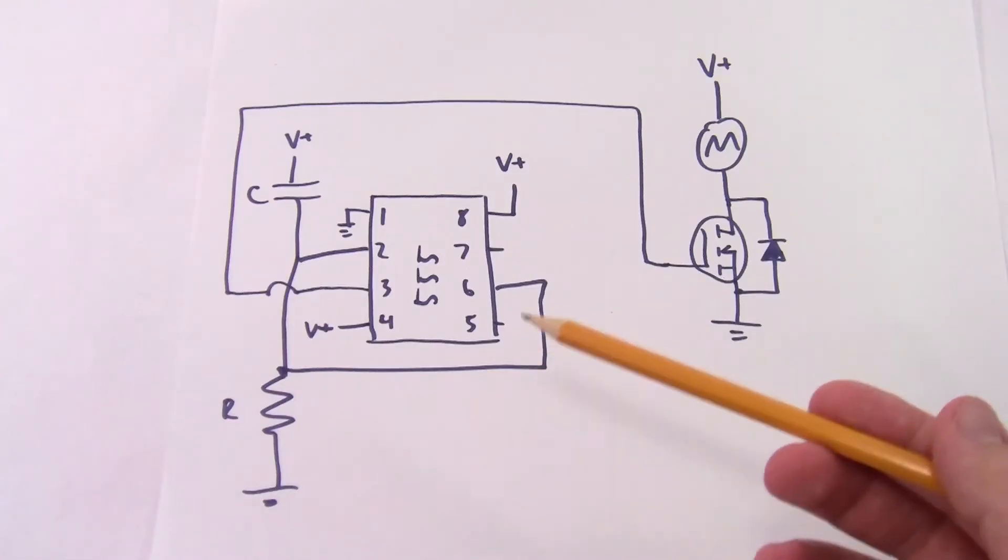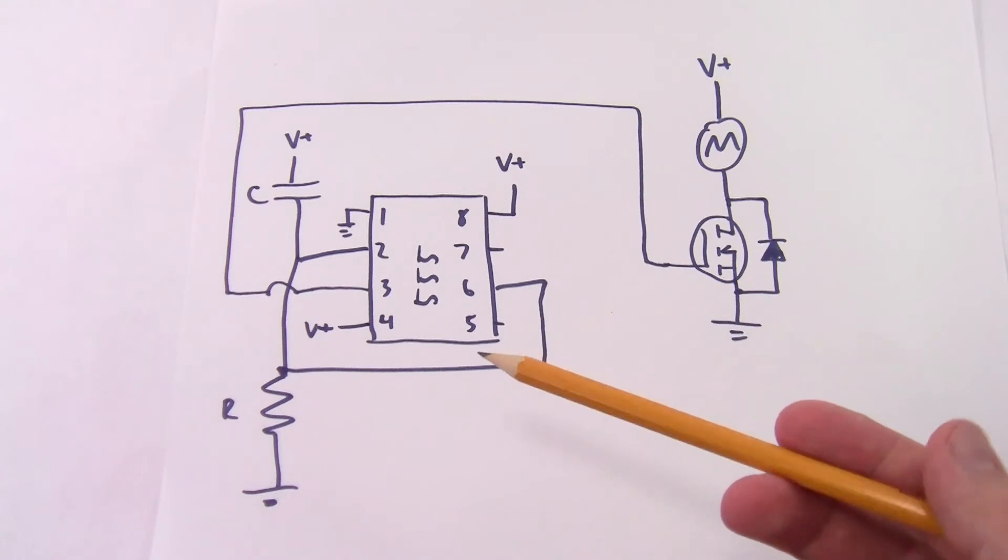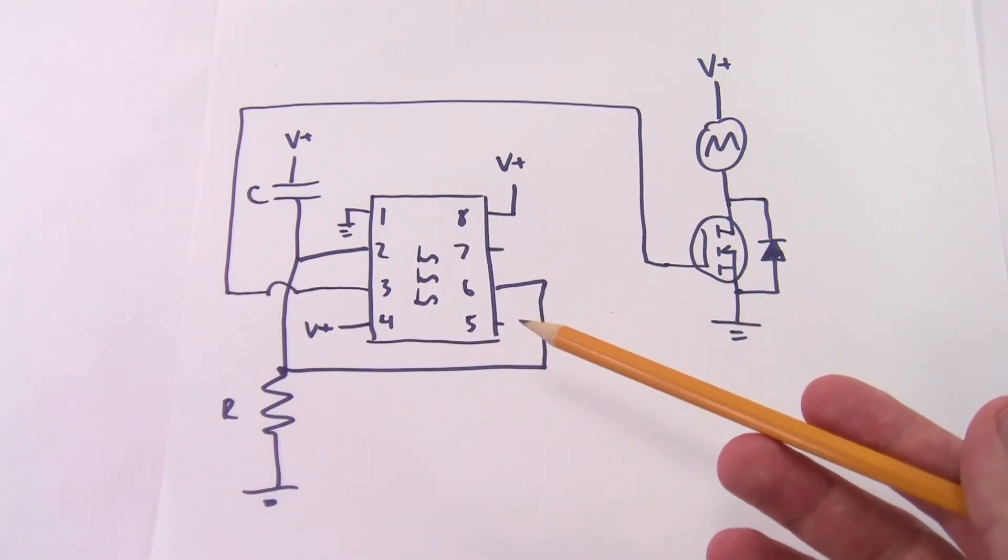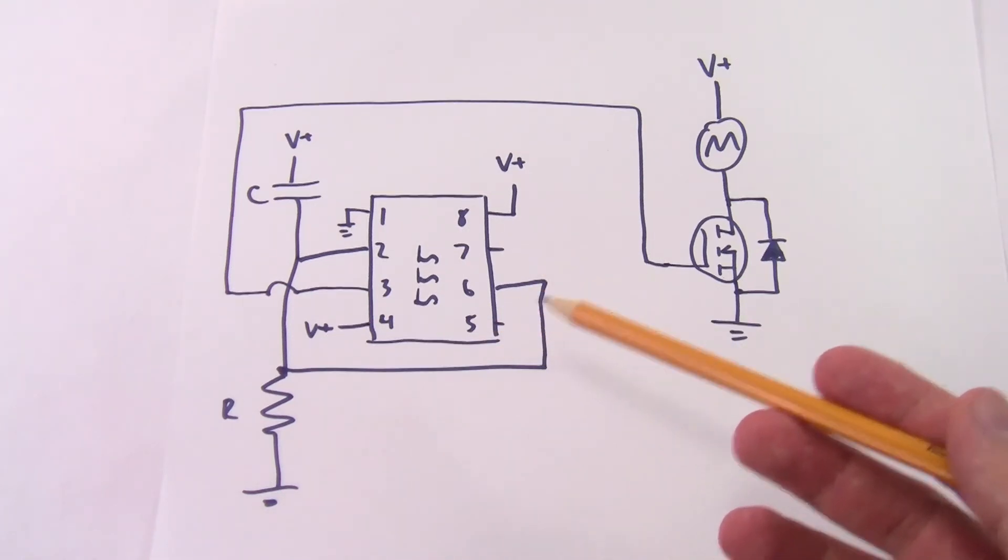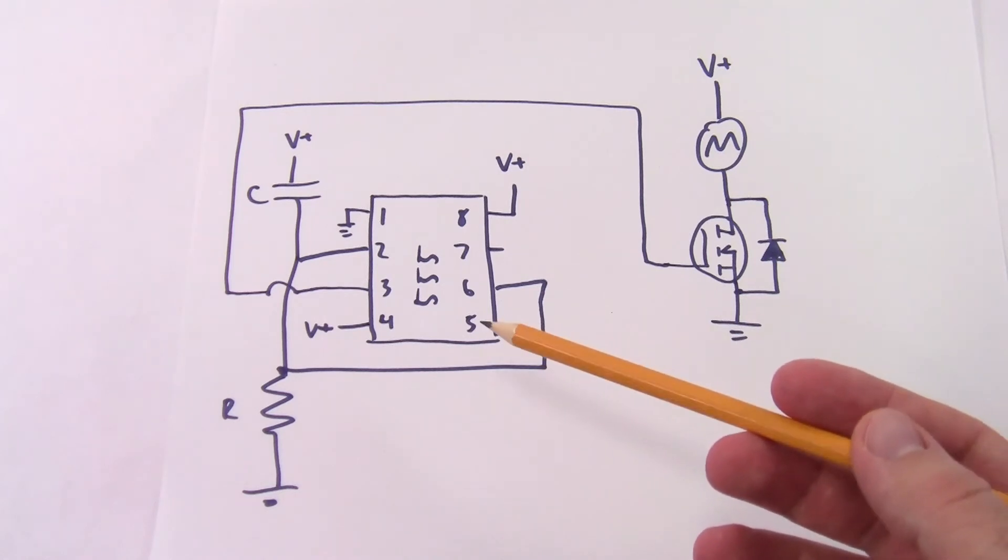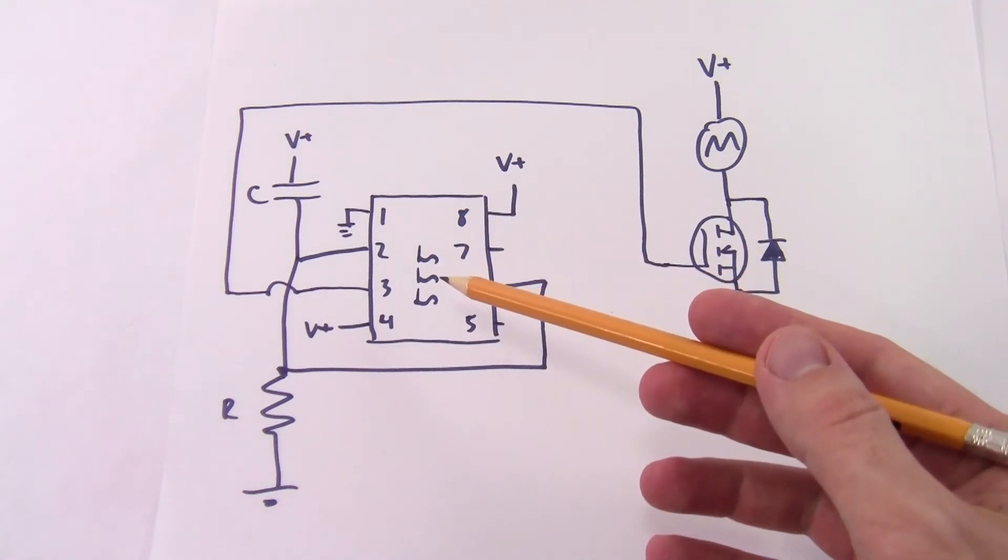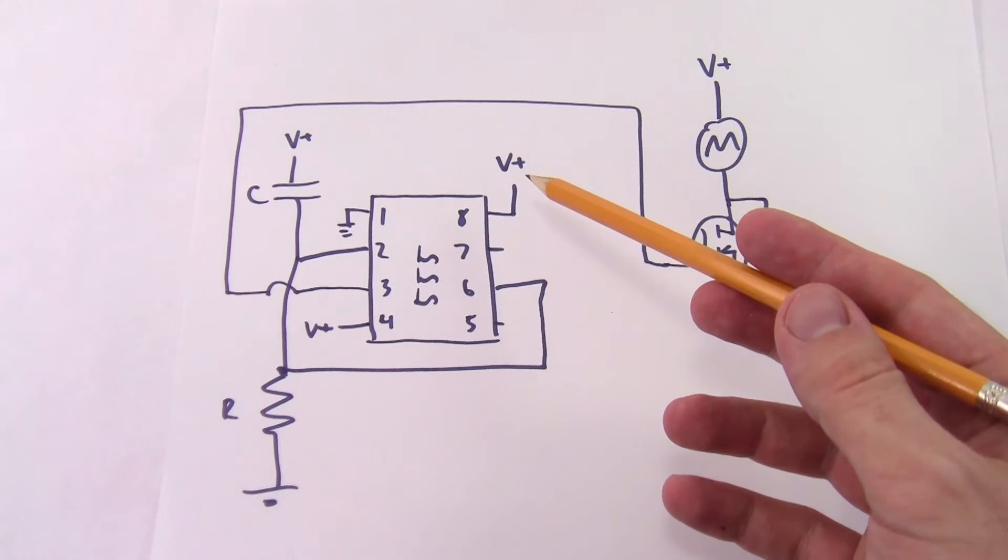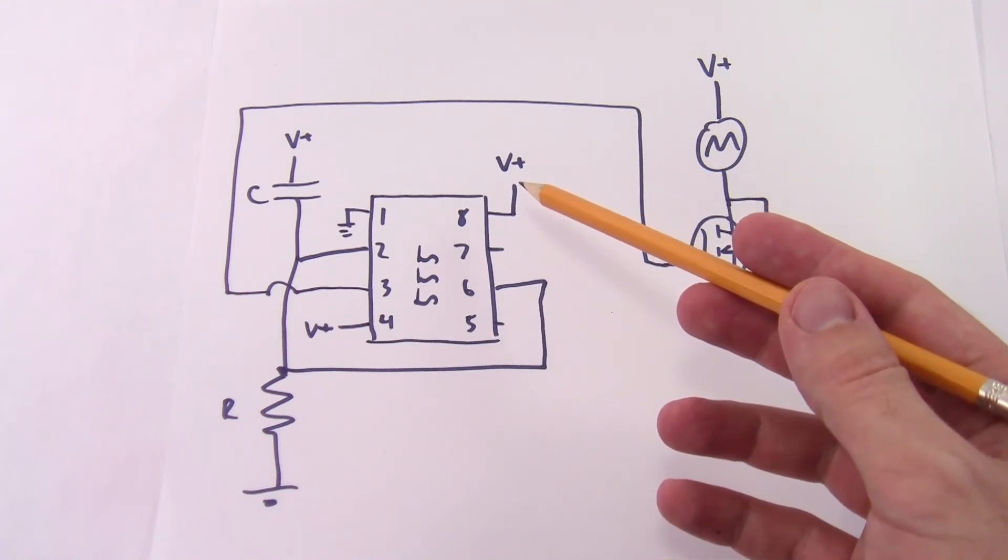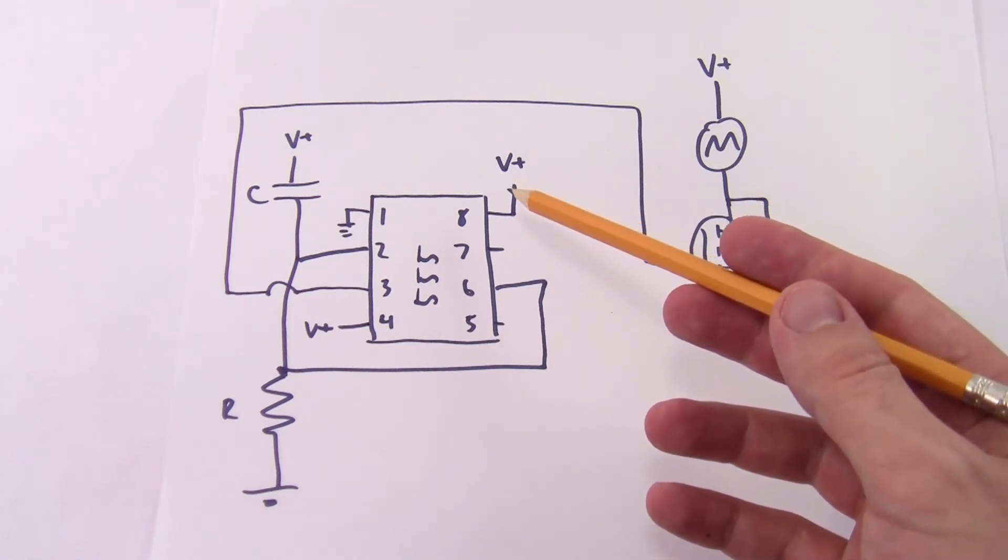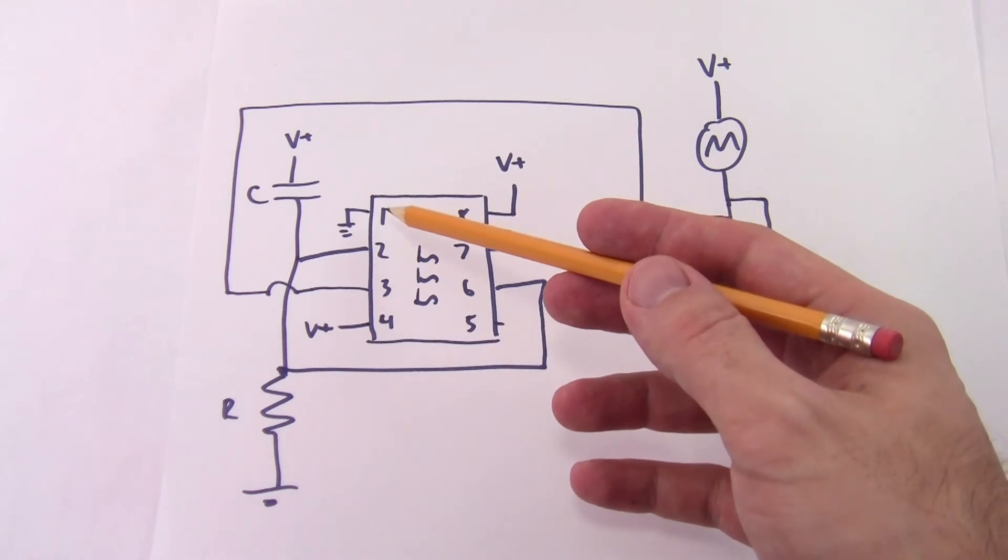Now let's take a look at the circuit diagram for those of you who would actually like to build this. If you just go Google 555 timer delay on or delay power on circuit you will find plenty of these. So we have our 555 timer that is going to need power. You can check the 555 data sheet but I think it can be powered by anything up to 18 volts so pin 1 goes to ground.